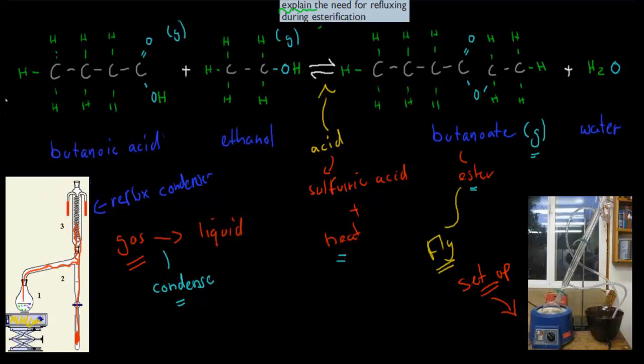The reflux condenser is basically an area where cold water flows through it. The cold water brings the gas back to its liquid form. Once it's liquid, that's when we can actually collect it and do stuff with it.